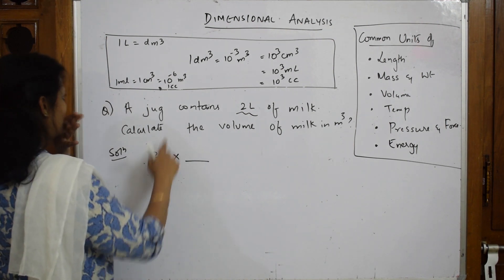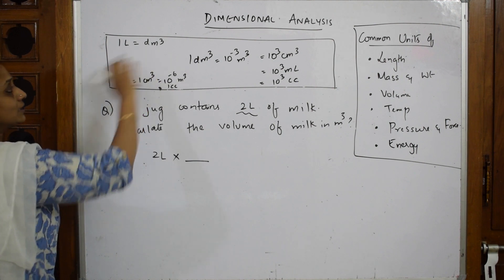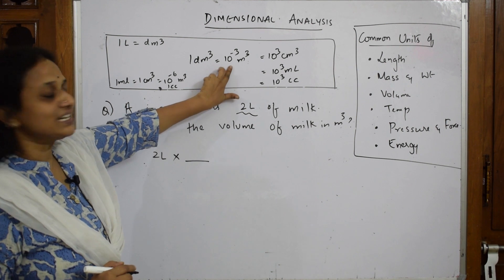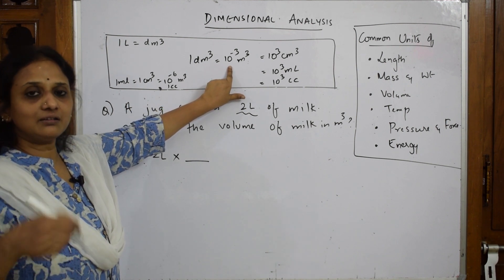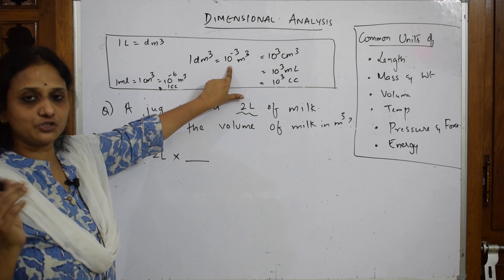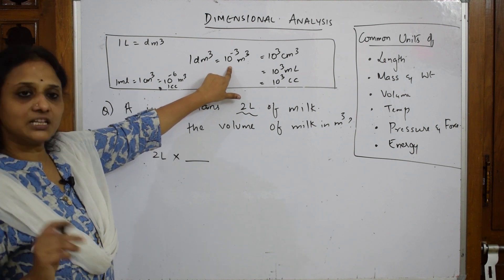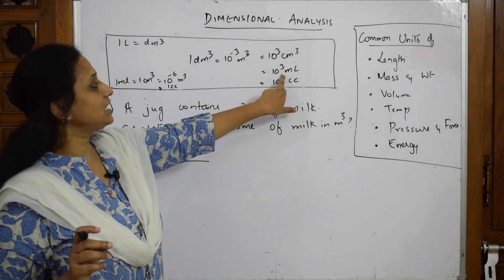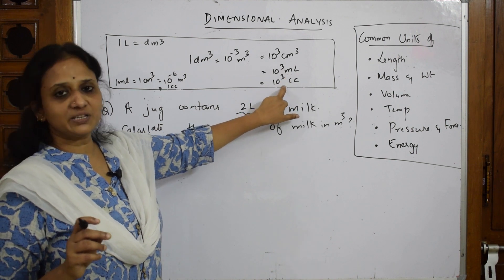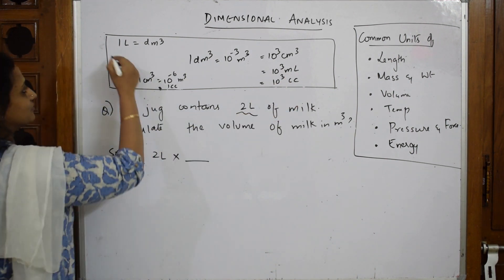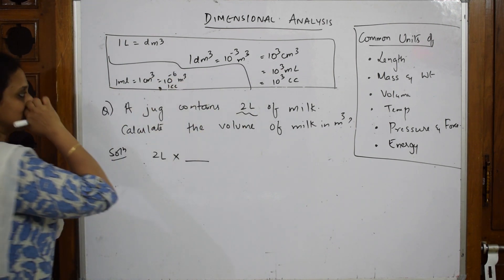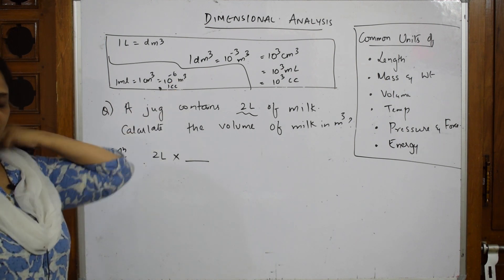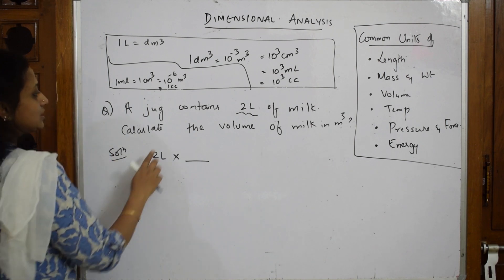From the conversion factors: 1 liter = 1 dm³. The same dm³ = 10⁻³ m³. Also, 1 dm³ = 10³ cm³ = 10³ mL = 10³ cubic centimeters. The second variety: 1 mL = 1 cm³ = 10⁻⁶ m³ = 1 cubic centimeter. Keep noting this in your book and practice.